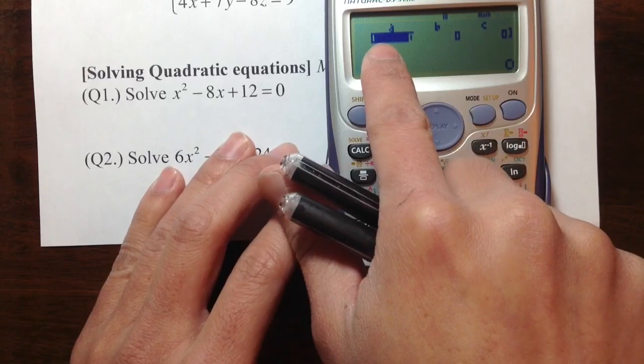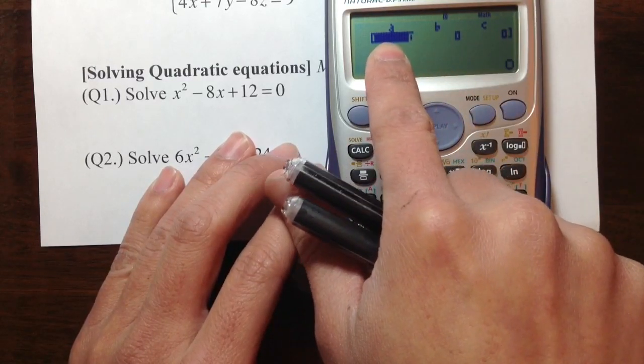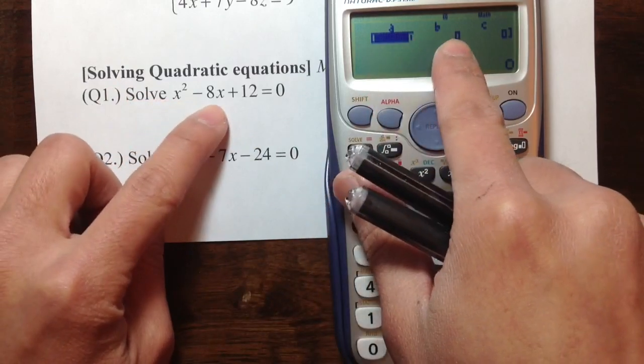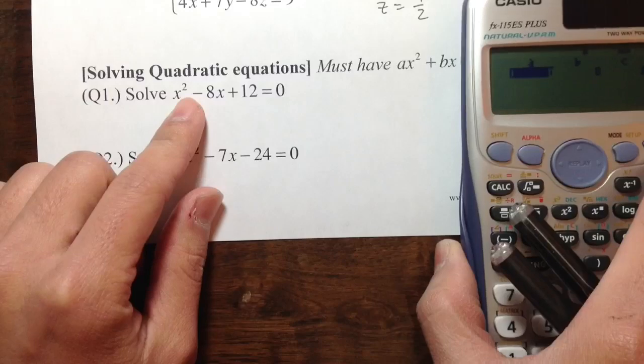It's going to ask you what's the value of a, b, and c. That's exactly the coefficient of x², the coefficient of x, and the number that has no x.